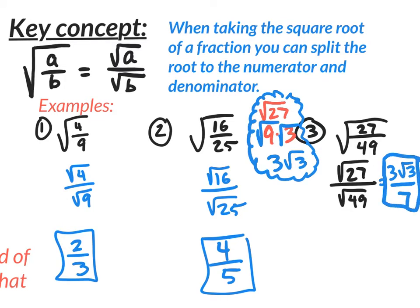So 3 square root of 3 over 7 is the answer to number 3. It's pretty simple. The square root of a fraction: split the square root to the numerator and the denominator, and then do any math possible. Simplify the top, simplify the bottom. It's kind of like doing two problems — one up top, one down below.